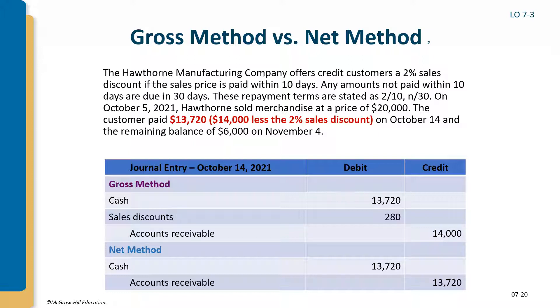Under the net method, when we originally recorded the sale we already assumed the discount would be taken. So when payment comes in within the discount period, we simply debit cash for the amount received and credit accounts receivable.